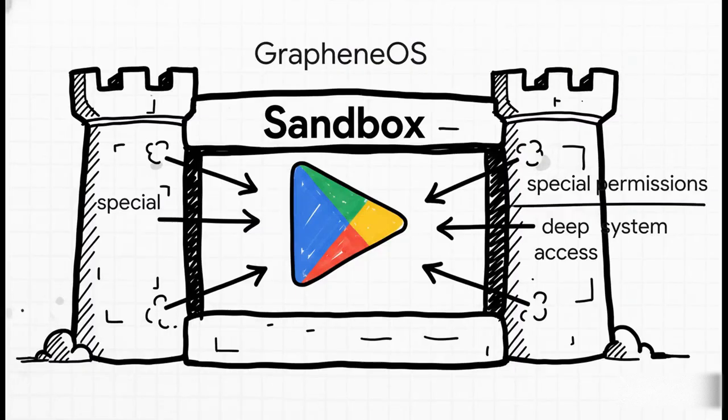One of the most significant features from a usability perspective is Sandboxed Google Play. GrapheneOS brilliantly solves the app compatibility problem by allowing you to install the official Google Play services, but with a critical difference: they get installed as regular, unprivileged applications. They're confined within the standard app sandbox with no special permissions and no deep hooks into the OS. This gives you access to the entire Play Store ecosystem without compromising the core security and privacy model of the operating system.